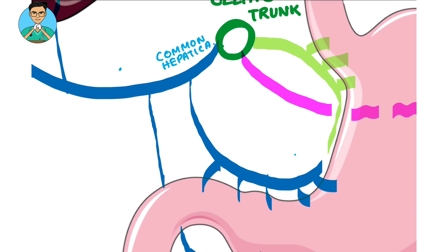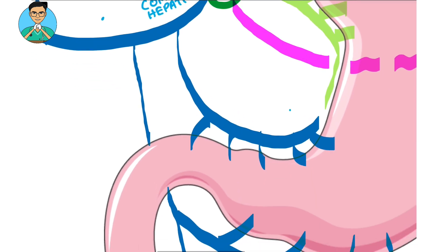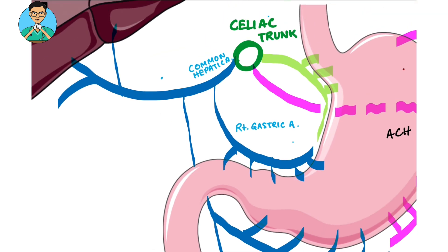The common hepatic artery gives off two branches. One branch moves along the lower part of the lesser curvature of the stomach and supplies it with blood. This branch is known as the right gastric artery, and it anastomoses with the left gastric artery.